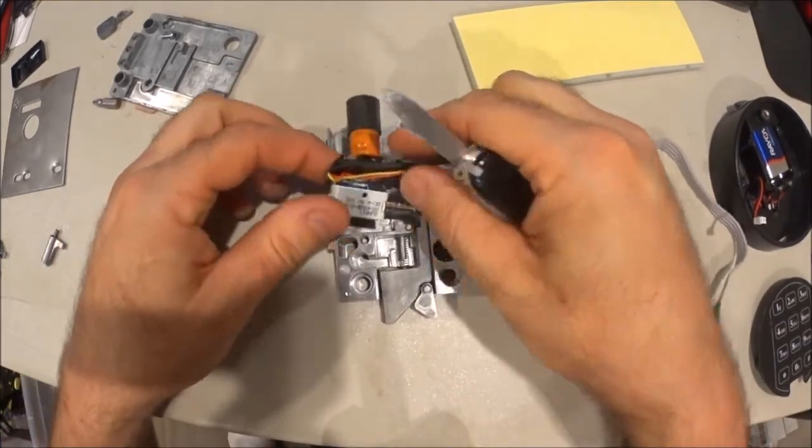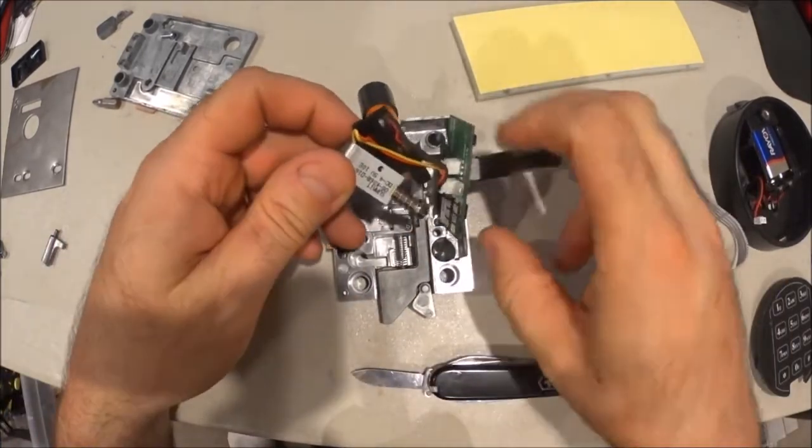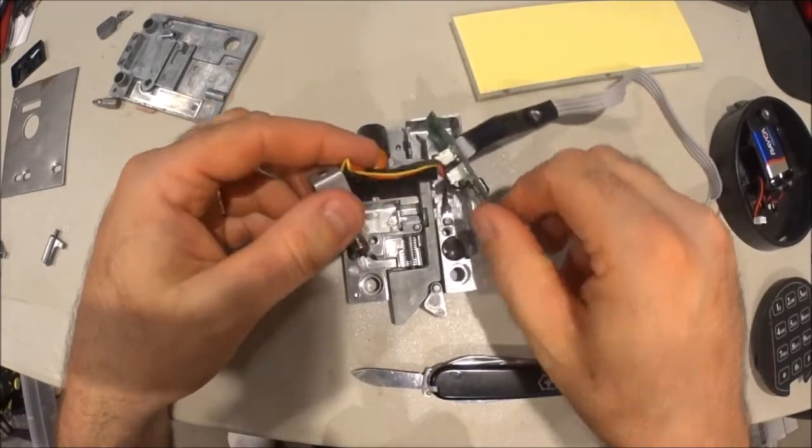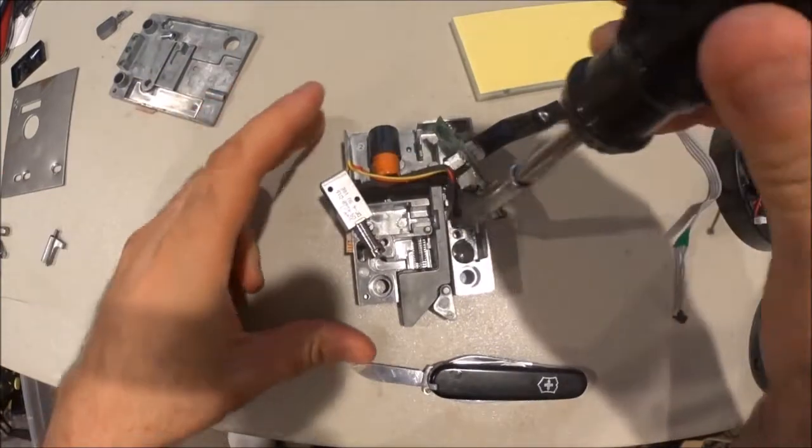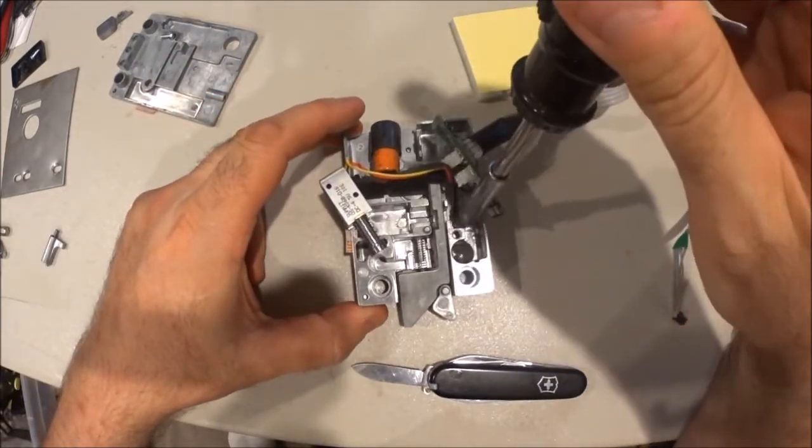And same with the solenoid and the capacitor. This has got a ground strap on it, so we can get down in here with our number one Phillips and pull that guy out of there.